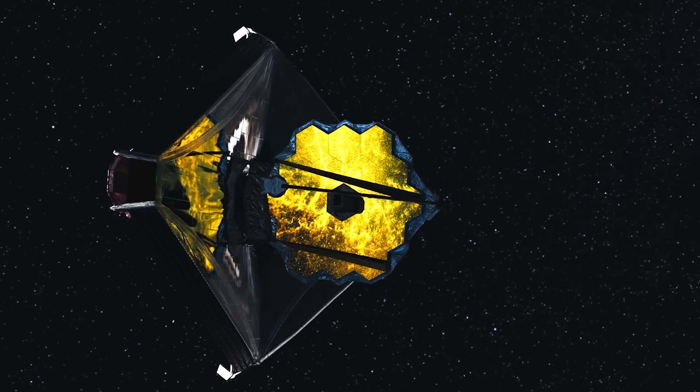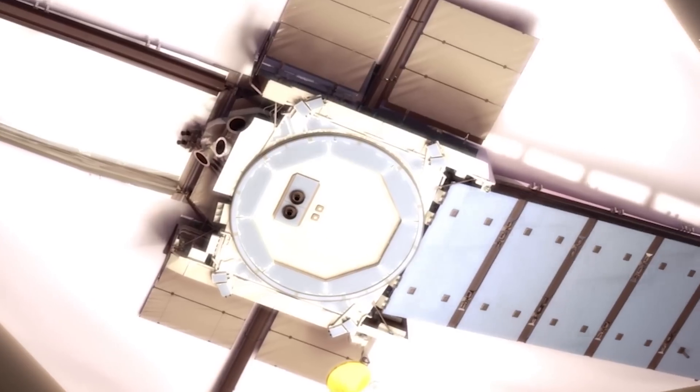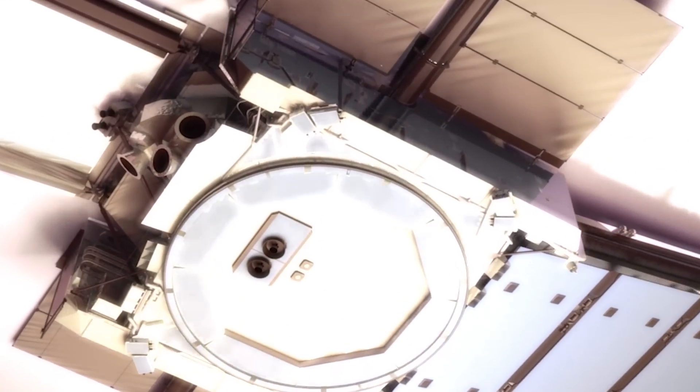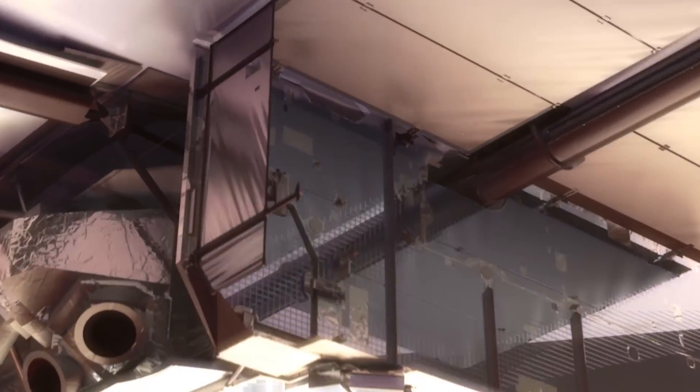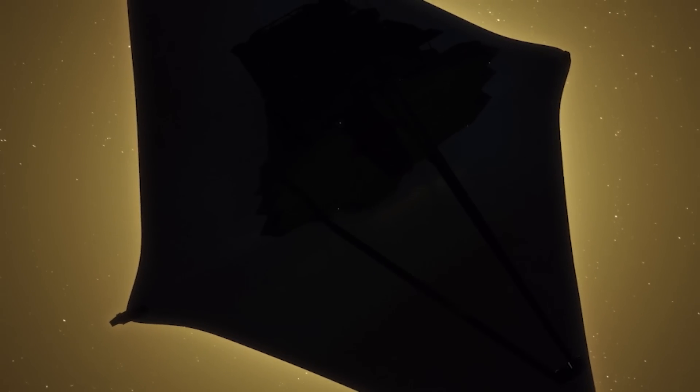These instruments have to be very cool in order to function well. James Webb measures in the infrared. It's basically measuring heat that is coming from an object. This is where heat radiation is in the spectrum. So if the instrument starts to get hot, then the instrument will be measuring its own heat. So we need the instruments to be extremely cold.